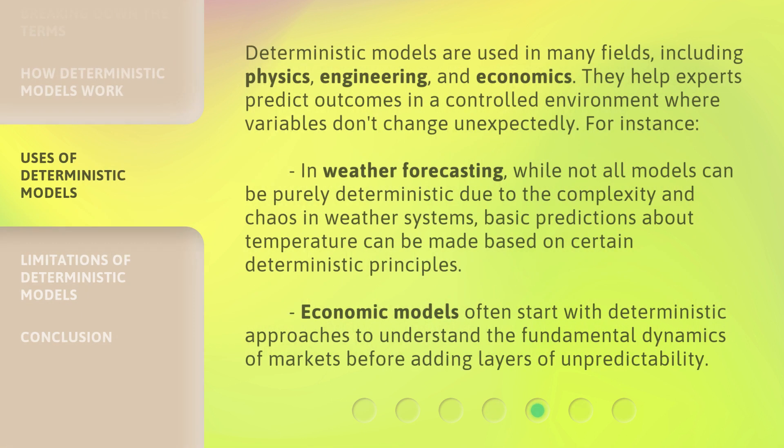Deterministic models are used in many fields, including physics, engineering, and economics. They help experts predict outcomes in a controlled environment where variables don't change unexpectedly. For instance, in weather forecasting, while not all models can be purely deterministic due to the complexity and chaos in weather systems, basic predictions about temperature can be made based on certain deterministic principles. Economic models often start with deterministic approaches to understand the fundamental dynamics of markets before adding layers of unpredictability.